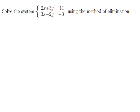Solve the system of equations 2x plus 3y equals 11, and 3x minus 2y equals negative 3 using the method of elimination.